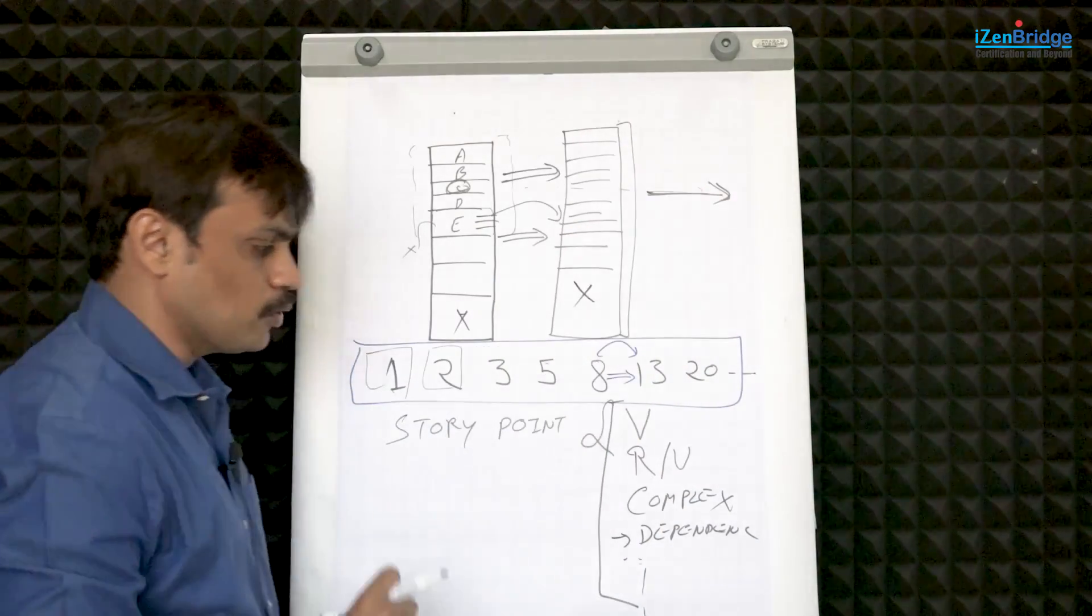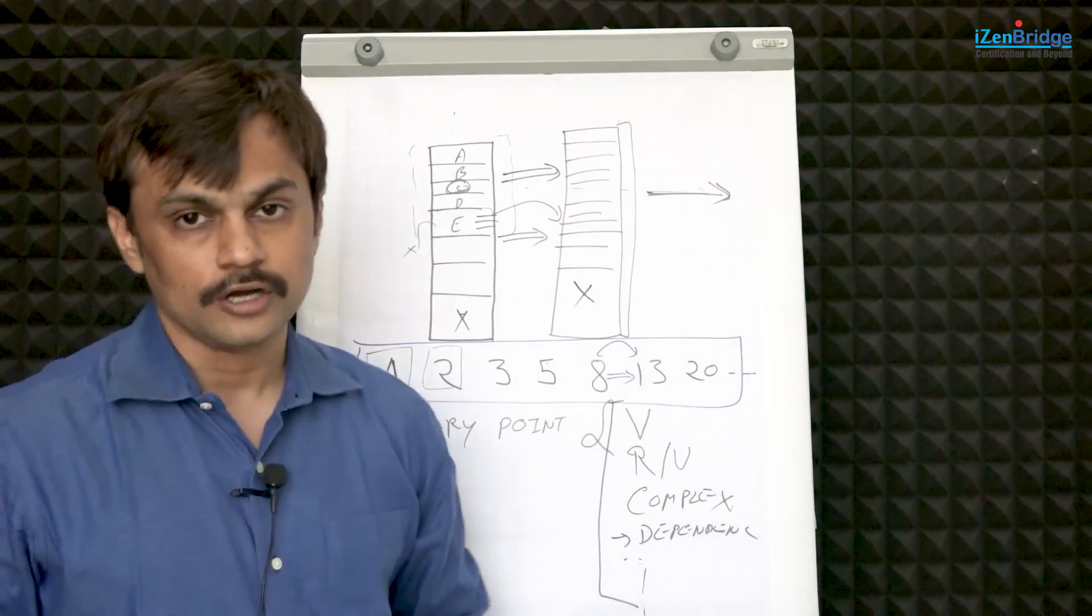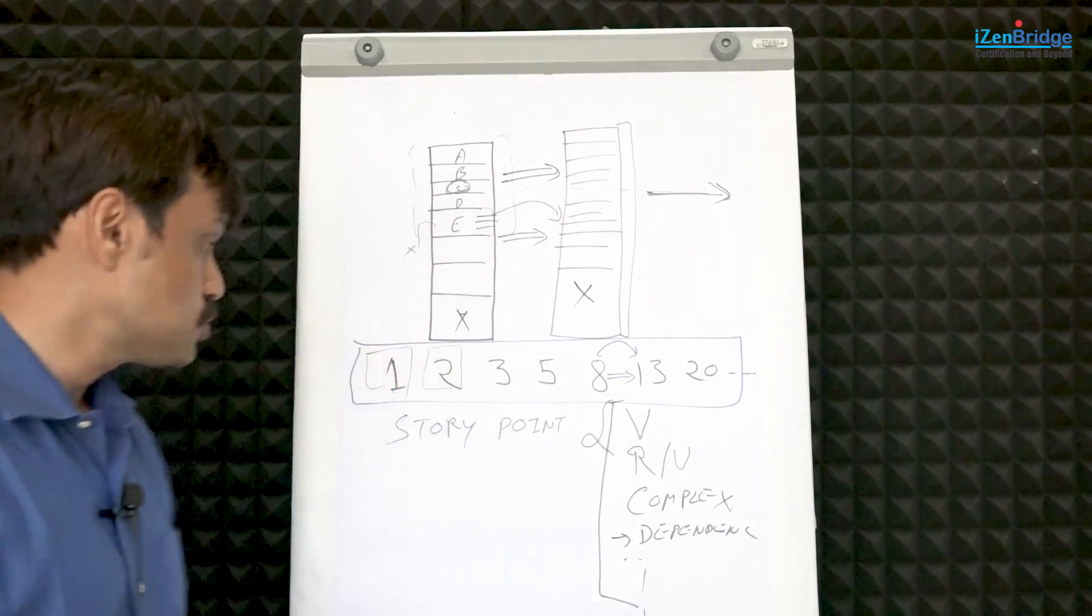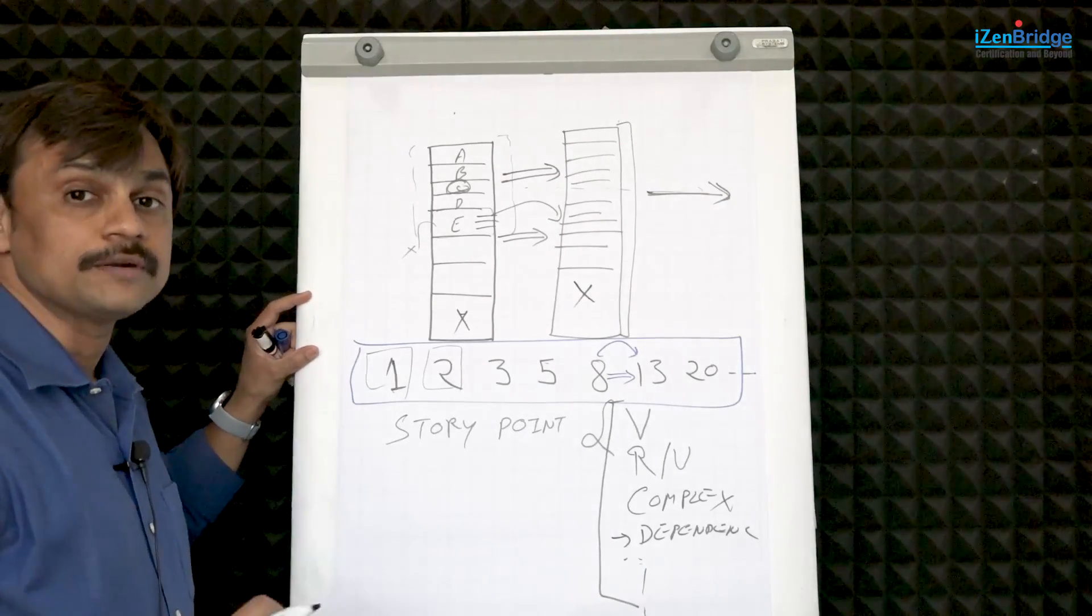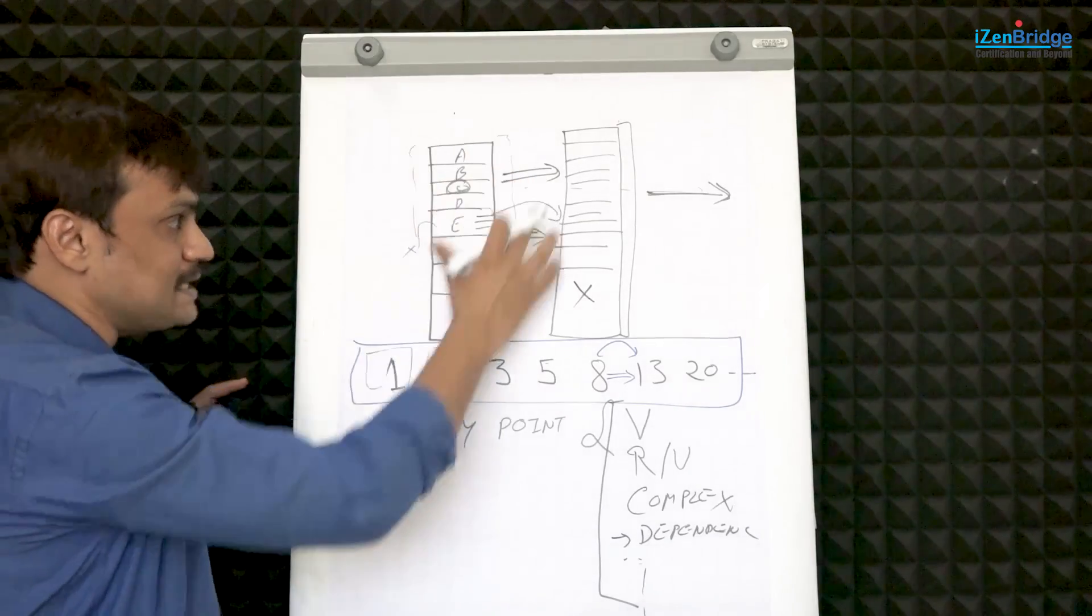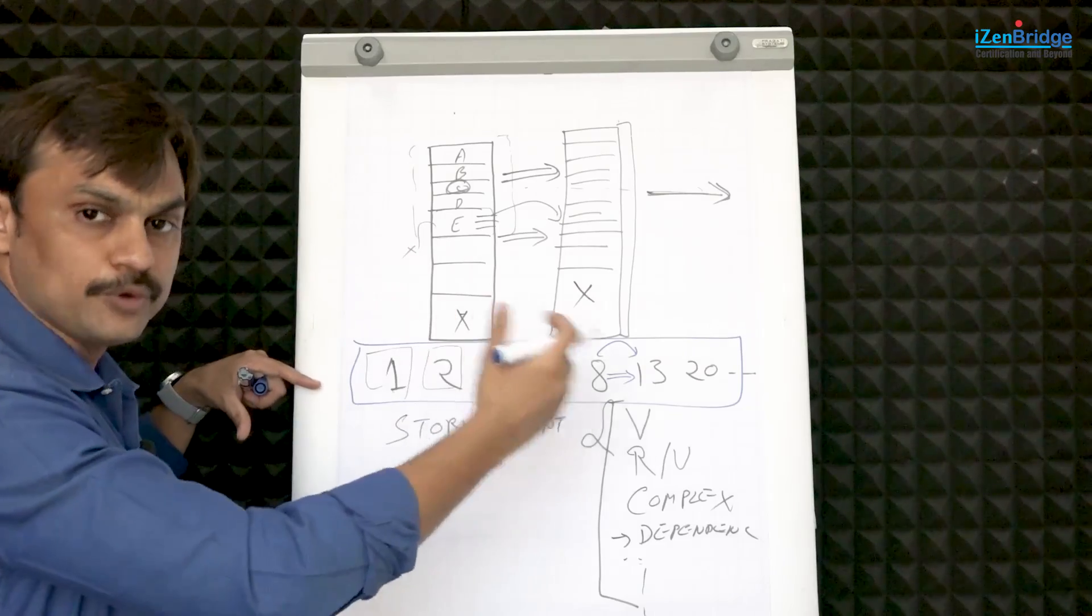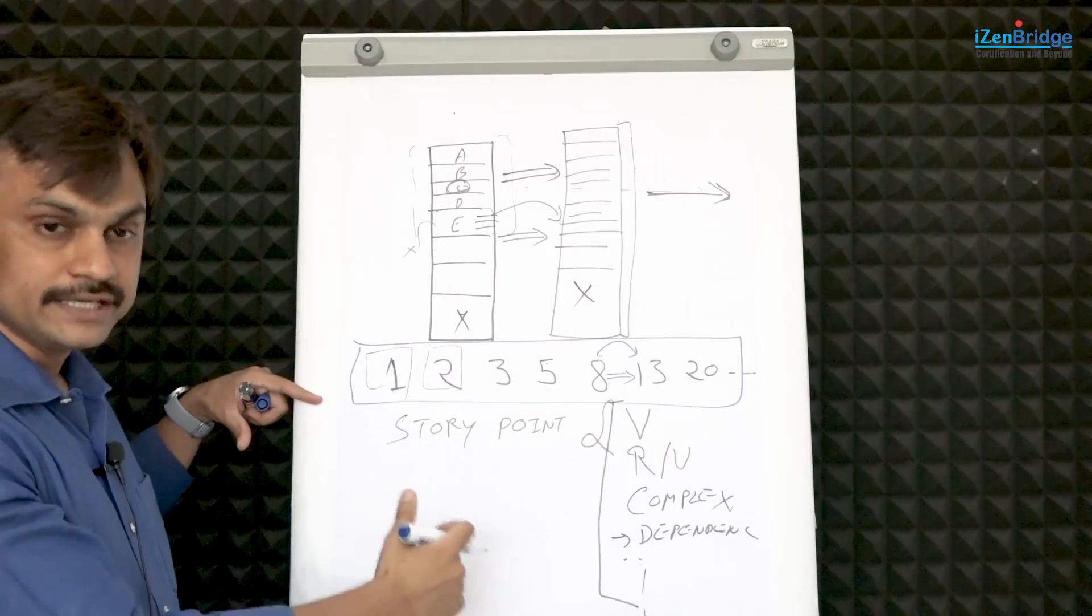So if I summarize, story points are absolute numbers. They are not representing days, hours, or anything. They represent the sizing of the product backlog items which are lying in a product backlog. We use a modified Fibonacci series which gives us non-linearity in the system.